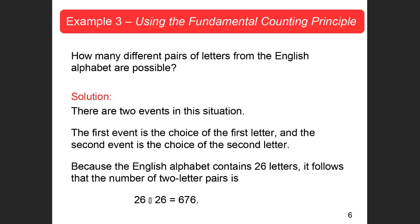How many different pairs of letters from the English alphabet are possible? If I got an A and an A, or an A and a B, or a B and a D — how many different combinations are there? There are 26 letters in the alphabet, so I would just multiply 26 times 26. There would be 676 different combinations in our sample space. That would be a lot to work out — I would definitely not want to list them all.